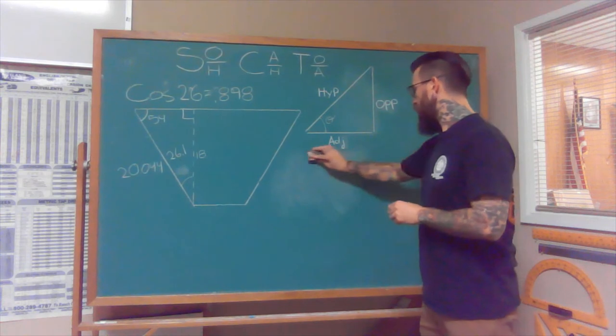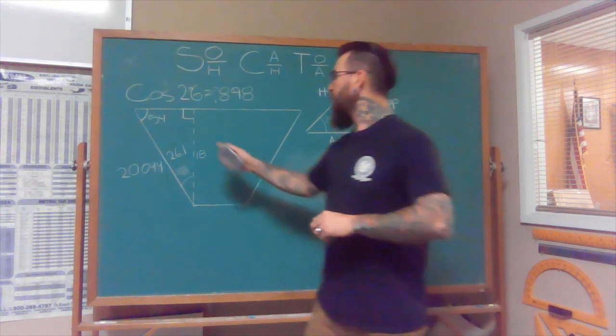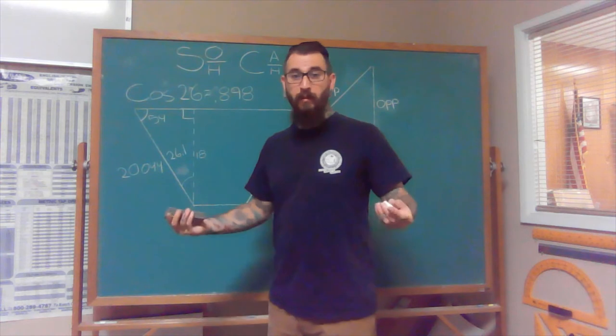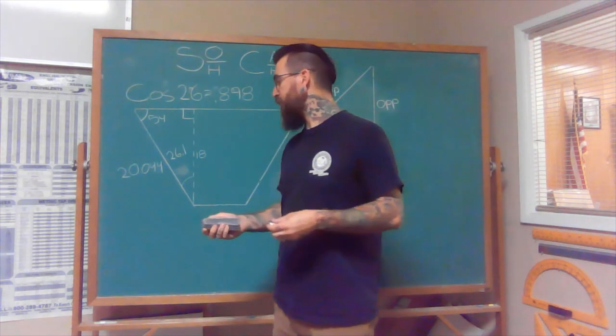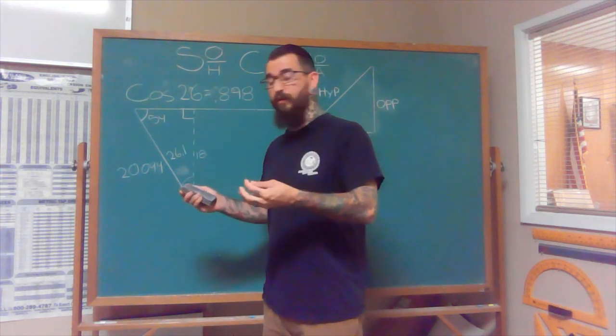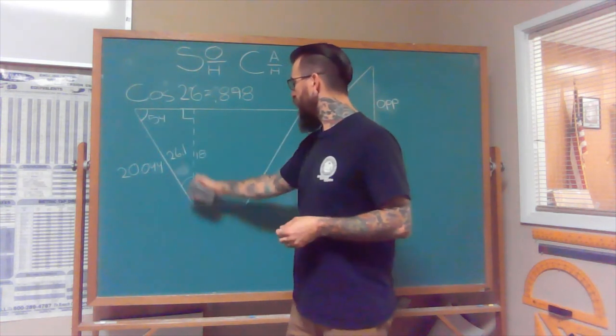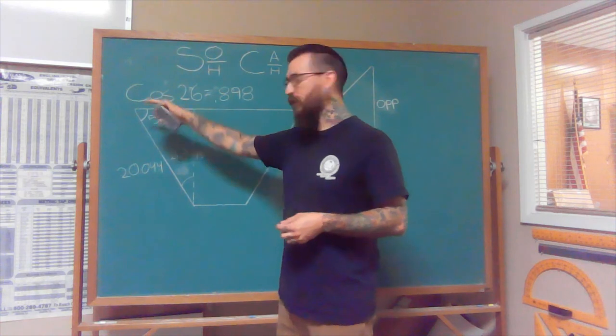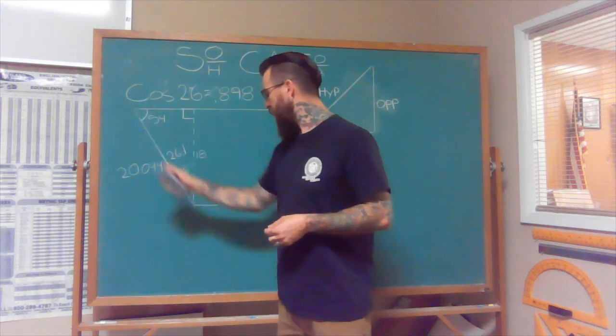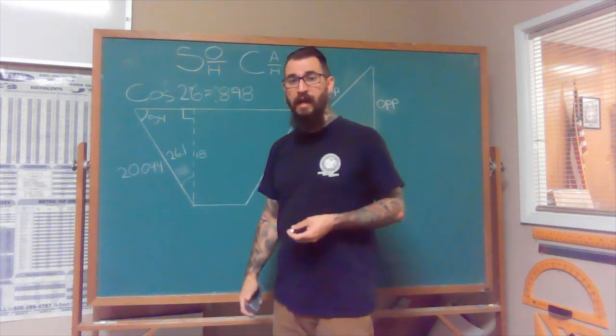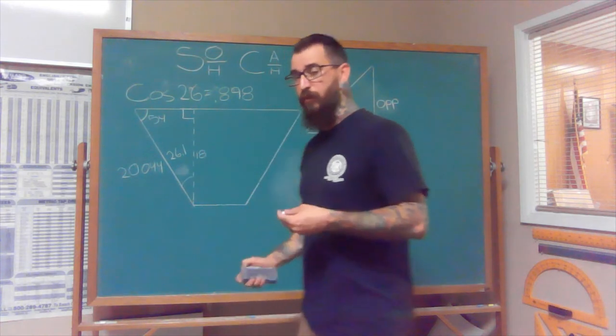So we're almost completely solved for this entire triangle. But what if we wanted to know the leg? It might be a lot easier to lay this trapezoid out if we know what this leg is. Because if we know that's 18, we have a right angle, and we come up a certain amount, if we connect that line with that line, it's going to automatically give us our 26 degrees that we're looking for.